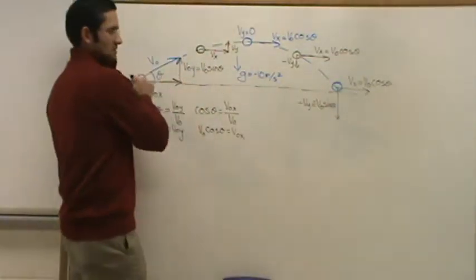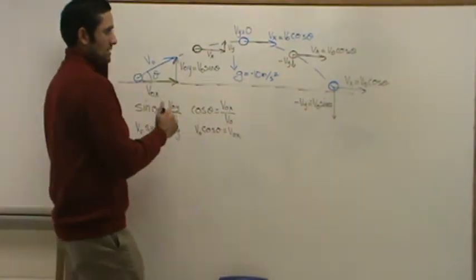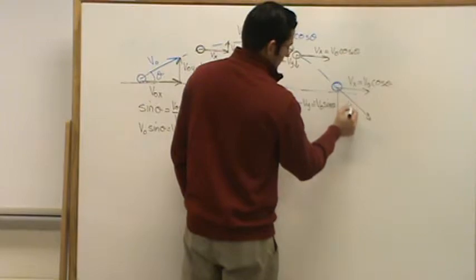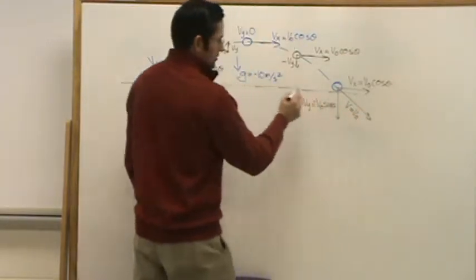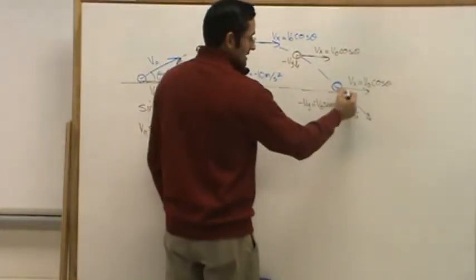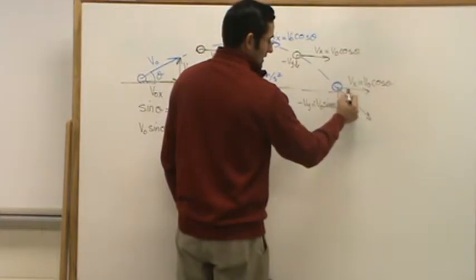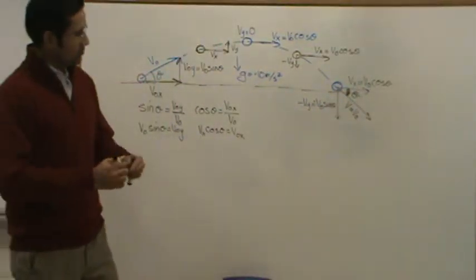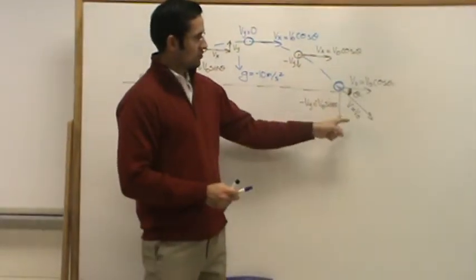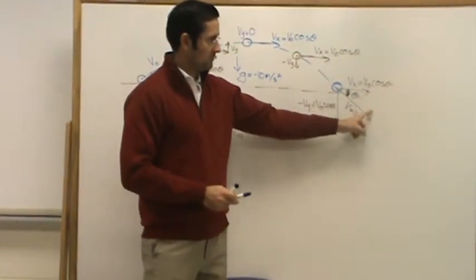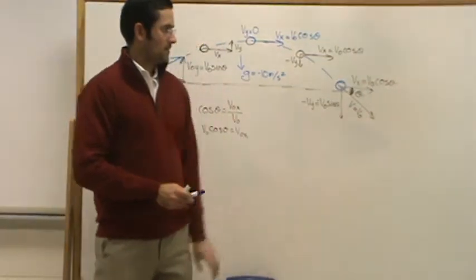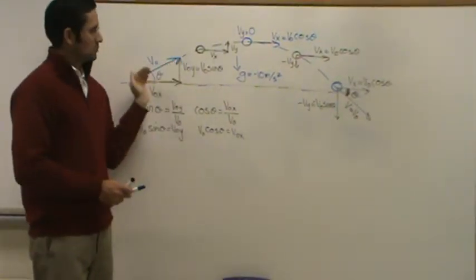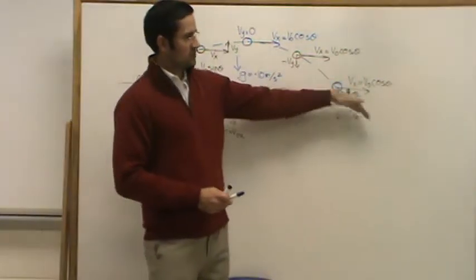When the ball gets back to where it started, the x velocity is exactly what it was to begin with — V naught cosine theta — and the vertical velocity will also be exactly what it was to begin with. So the vertical velocity at the end is negative V naught sine theta, while at the start it was V naught sine theta. The resulting velocity and angle theta will be the same, and the triangles are identical — except going up versus coming down.